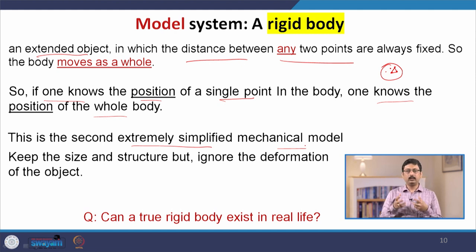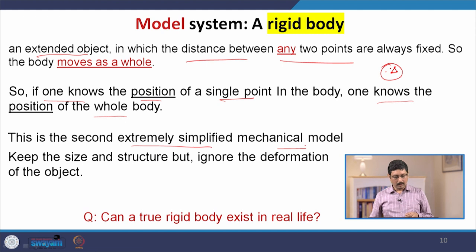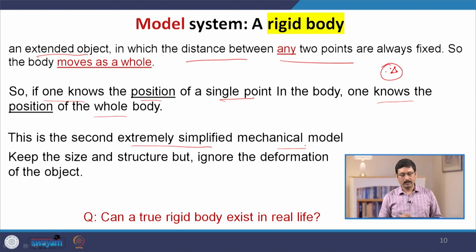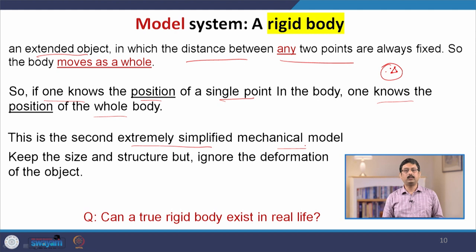Deformation means you are trying to change the distance between two points inside the object, which is not allowed by the definition of a rigid body. This is why this is an ideal and very simple model — the moment you include deformation, the analysis of the problem becomes more complicated. Can a true rigid body exist? Can you think of any example of a truly rigid body in real life?